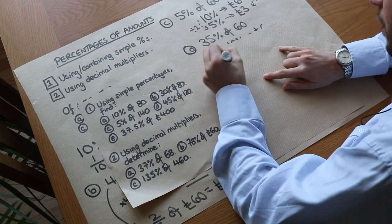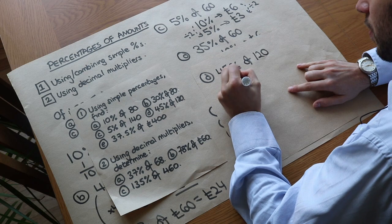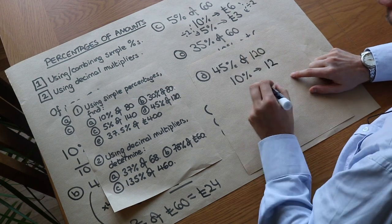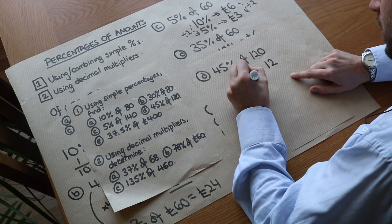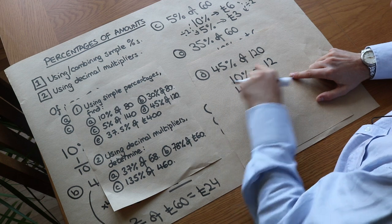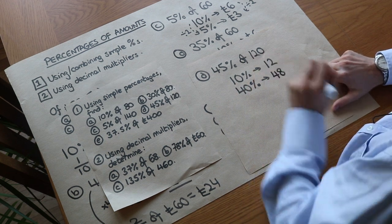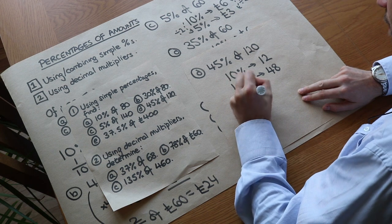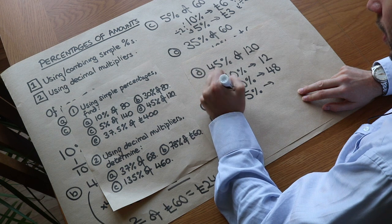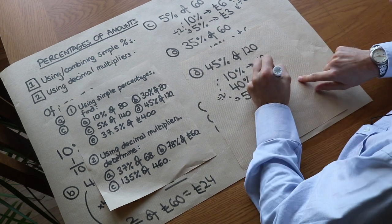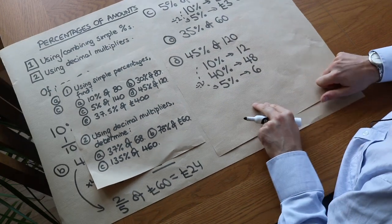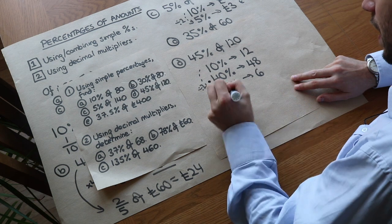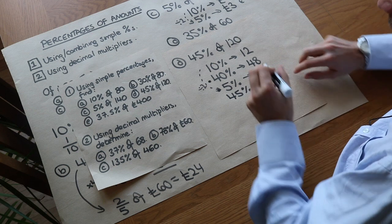What about 45% of 120? First, 10% of 120 is a tenth, which is 12. Then 40% is four times as much: 12 × 4 = 48. We need an extra 5% on top of that. Five percent is half of 10%, so we divide 12 by 2 to get 6. Now we combine the values needed for 45%: 40% and 5% together. So 48 + 6 = 54.